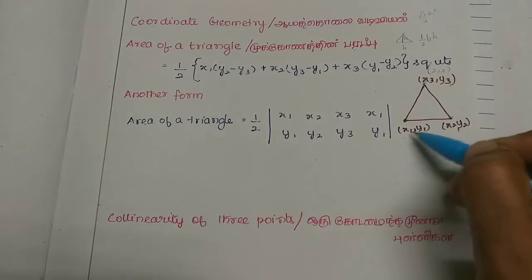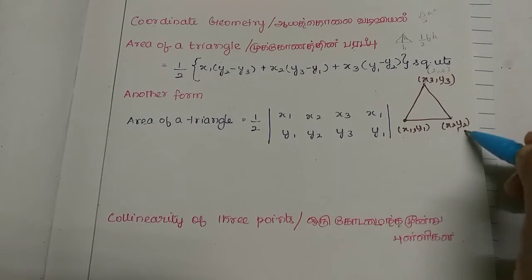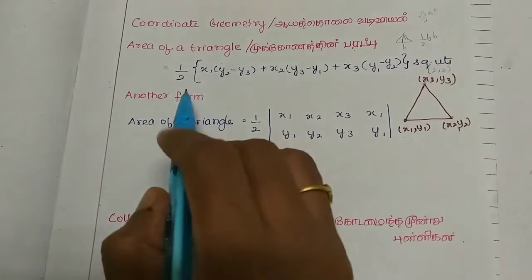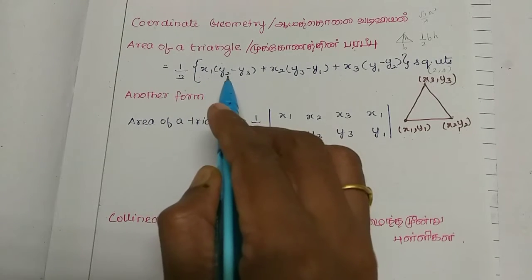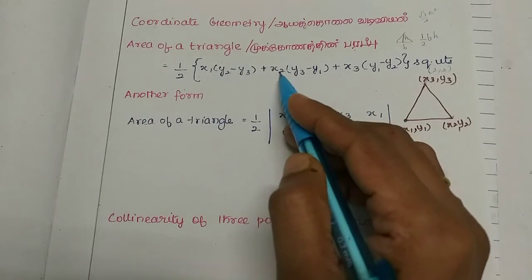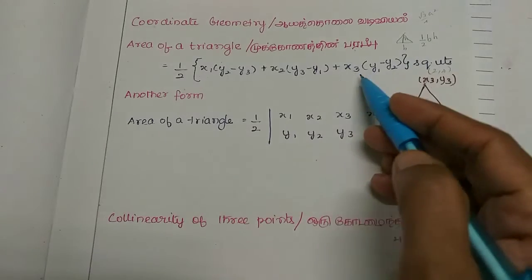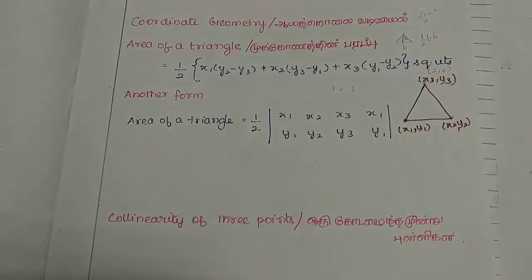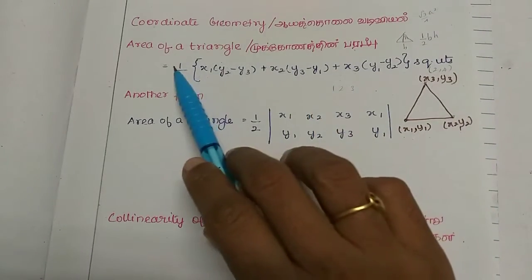So the formula is half into this — there are three points: x1, x2, x3, then y1, y2, y3. The formula is: half into x1(y2 minus y3) plus x2(y3 minus y1) plus x3(y1 minus y2). This is the formula to find the area of the triangle.